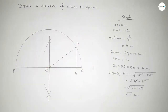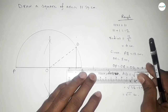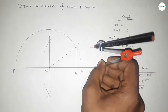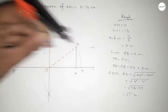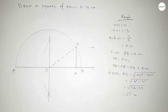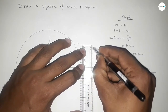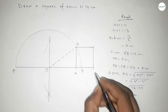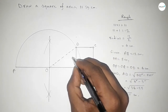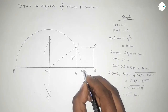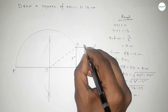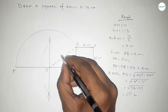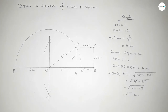Taking the length AD with the compass and extending line PQ, we draw arcs from both ends with the same length. The arcs intersect, and joining those points gives us points B and C. So AB = BC = CD = DA = √11 centimeters, and the diagonal sides are 5 cm and 6 cm respectively.